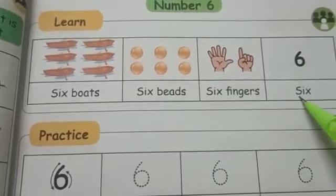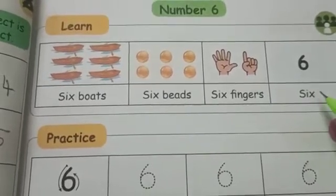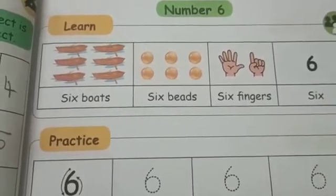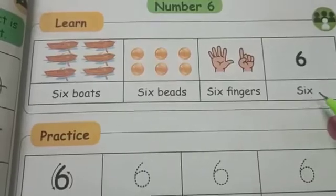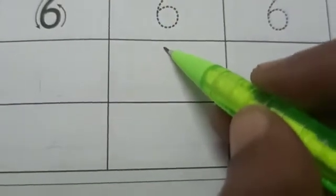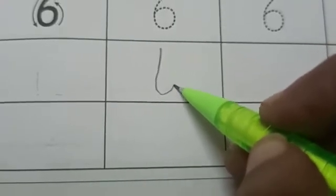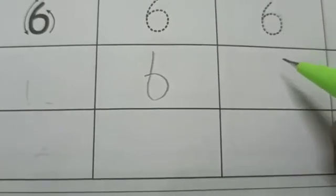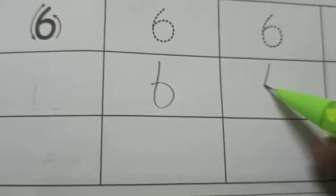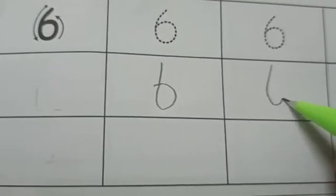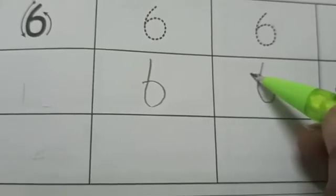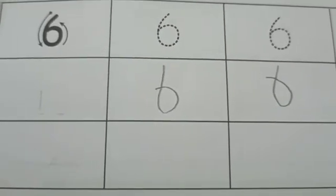Number 6. S-I-X. What is the spelling for number 6? S-I-X. Next we are going to write number 6. See, slide down and around to pick up sticks. That is the way to make the number 6.